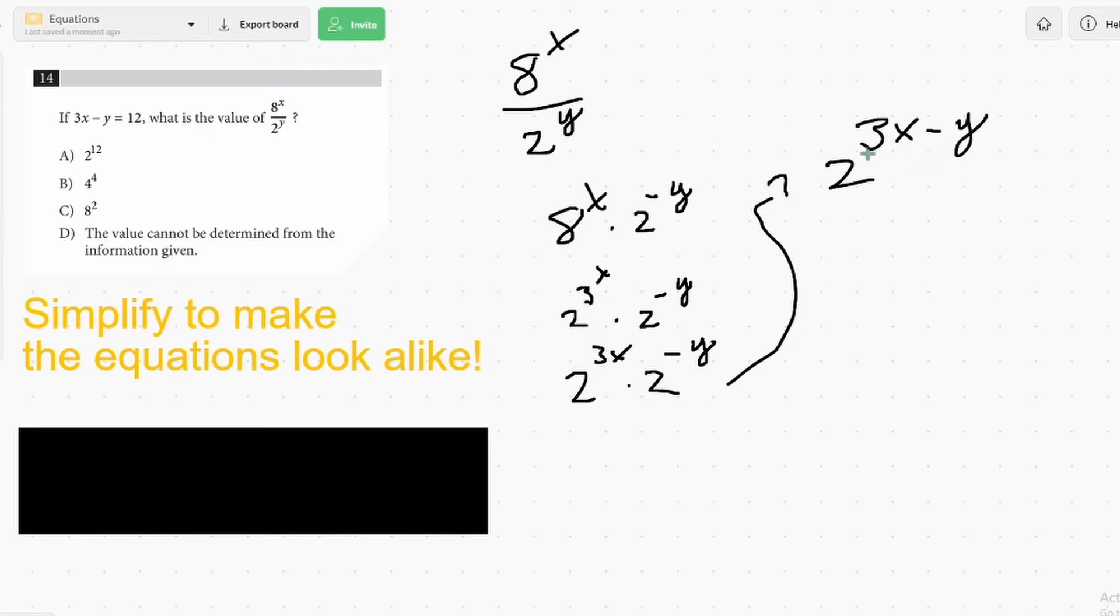And we get 2 to the 3x minus y. Now that we have this second expression looking like the first one, we can just plug in 3x minus y equals 12, and we get 2 to the 12. And that gives us our answer.